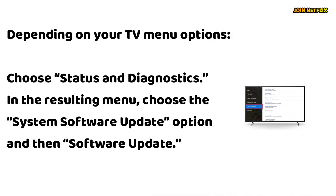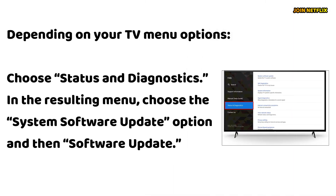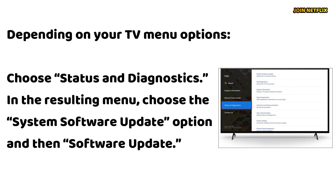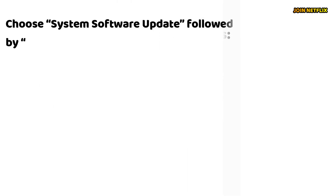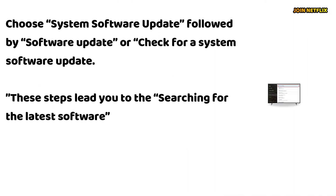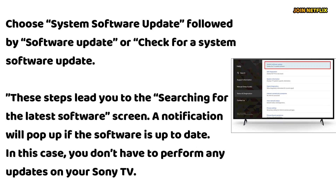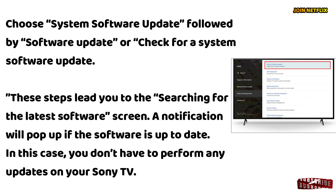Depending on your TV menu options, choose Status and Diagnostics. In the resulting menu, choose the System Software Update option and then Software Update. Choose System Software Update followed by Software Update or check for a System Software Update. These steps lead you to the searching for the latest software screen. A notification will pop up if the software is up-to-date. In this case, you don't have to perform any updates on your Sony TV.